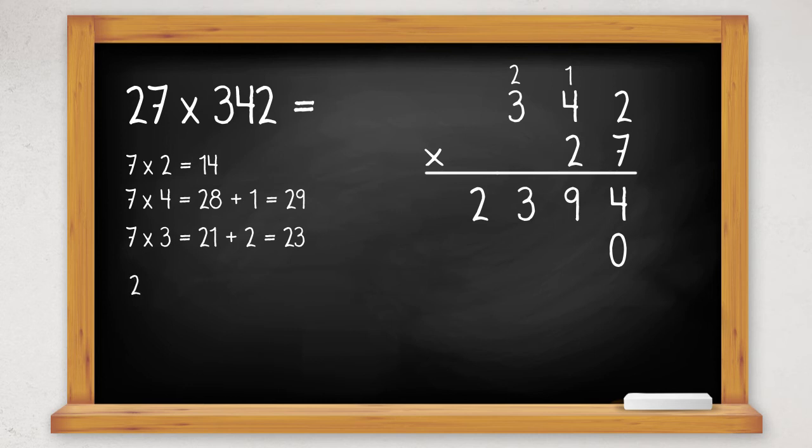So 2 times 2 is 4, 2 times 4 is 8, and 2 times 3 is 6. So we have 6,840.